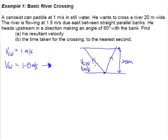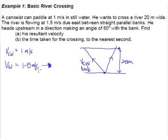Your diagram has to carry a certain sense of scale. If this vector represents 1 meter per second, you need a longer vector to represent 1.5 meters per second. The faster you are, the longer the vector — it's very logical.